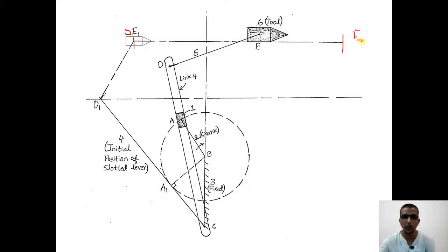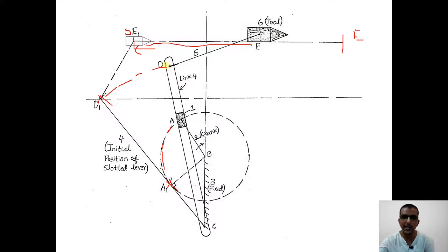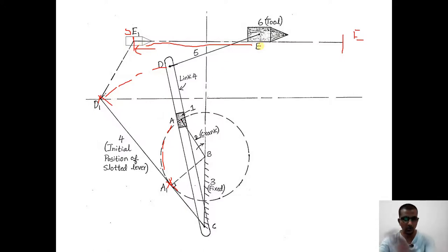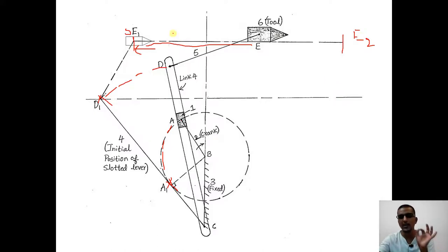To bring E to E1, D moves to D1 and A moves to A1, so E moves to E1 — this is the starting position for the forward stroke. Moving from E1 to E2 will be called the forward stroke, and E2 back to E1 will be called the return stroke.